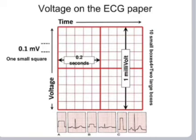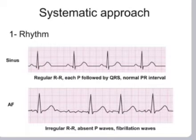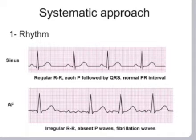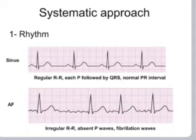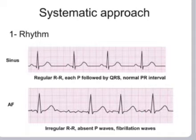Two large boxes equal 1 millivolt. A systematic approach is advised. First, check for the rhythm. In sinus rhythm, there is a regular RR interval, each P is followed by a QRS, and there is a normal PR interval.